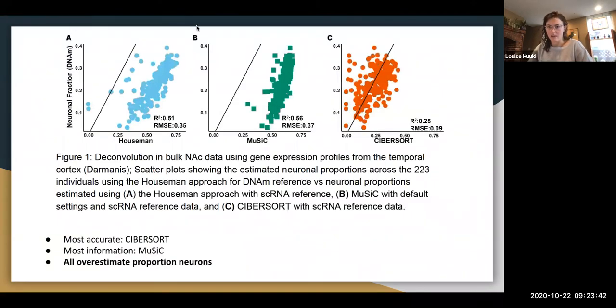All right, so this is figure one. So this is where they compared the performance of these three... I guess MIND wasn't really in there. So they compare the performance of these three algorithms based on neuronal fractions derived from the methylation data. And basically, CIBERSORTx is the most accurate, follows the one-to-one line the best, but MuSiC is the most informative. And I guess that's based on how clustered the points are.